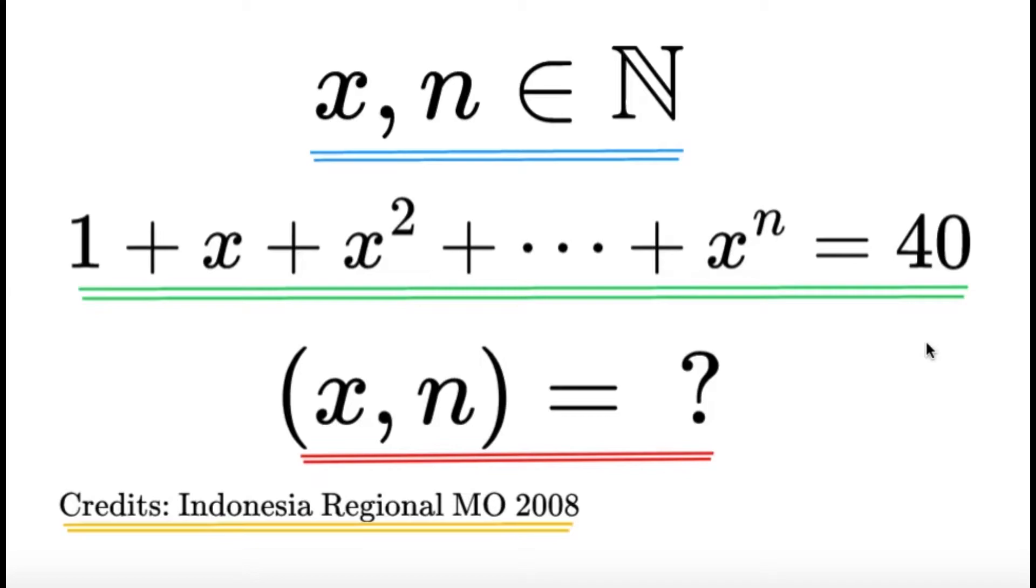As usual, pause this video if you'd like to give this item a try. But if you're done, let us dive into the solution. Here, with x and n being natural numbers, we can try to see some special cases here.